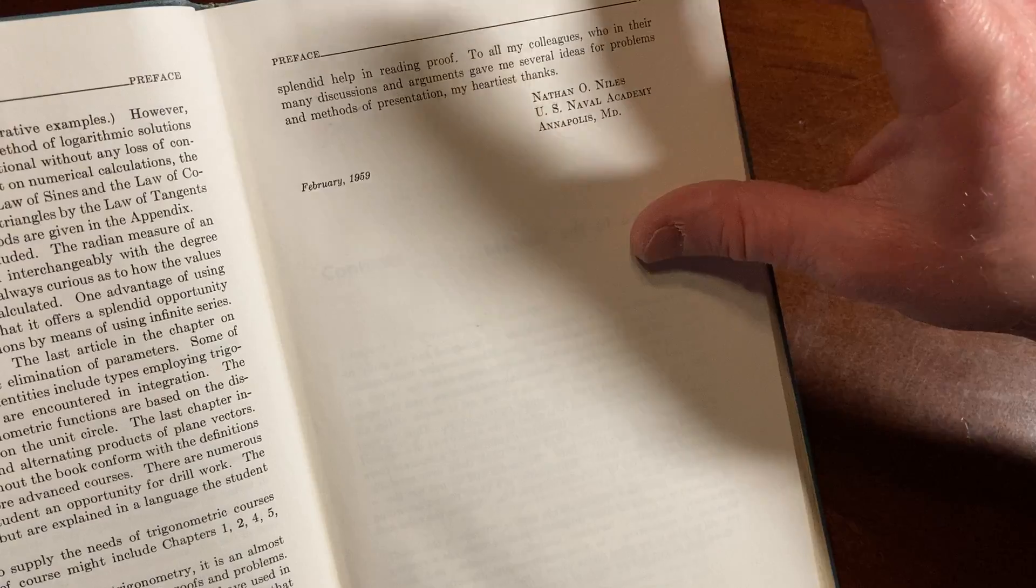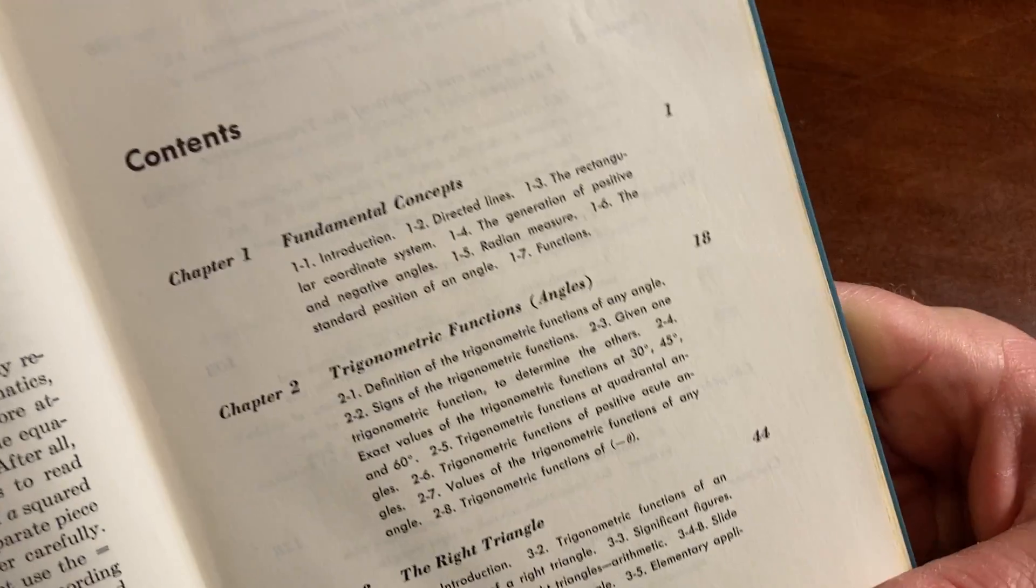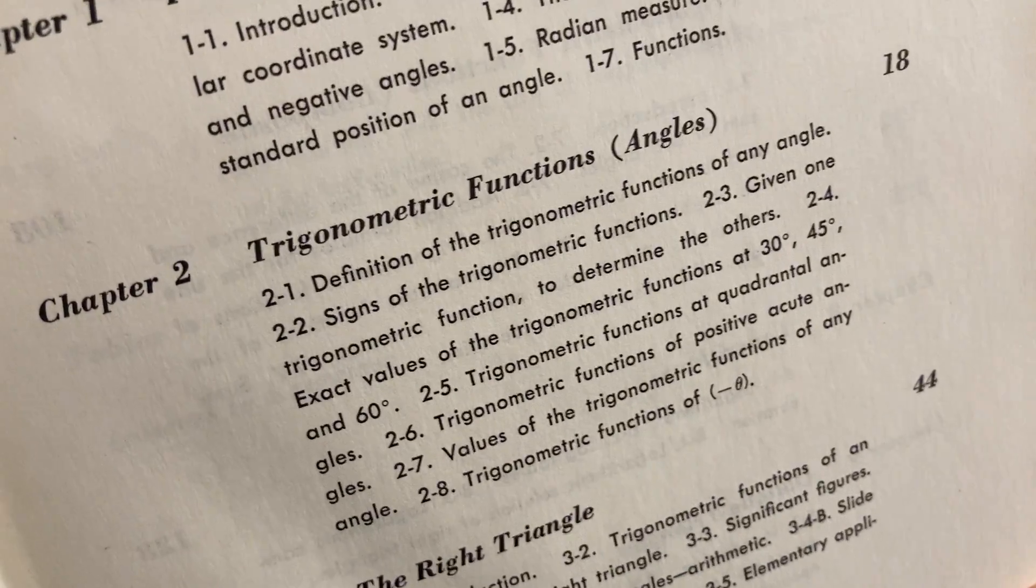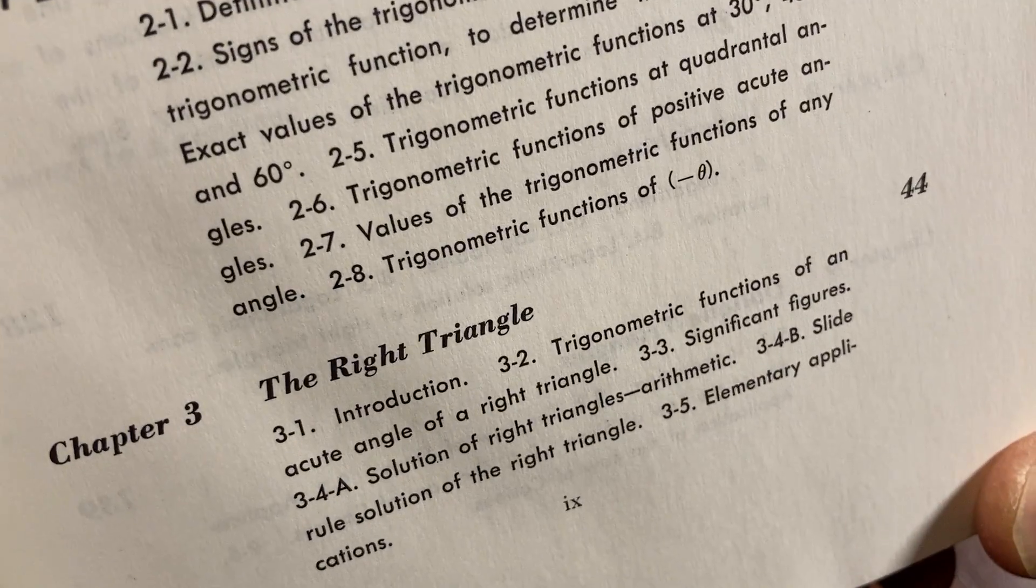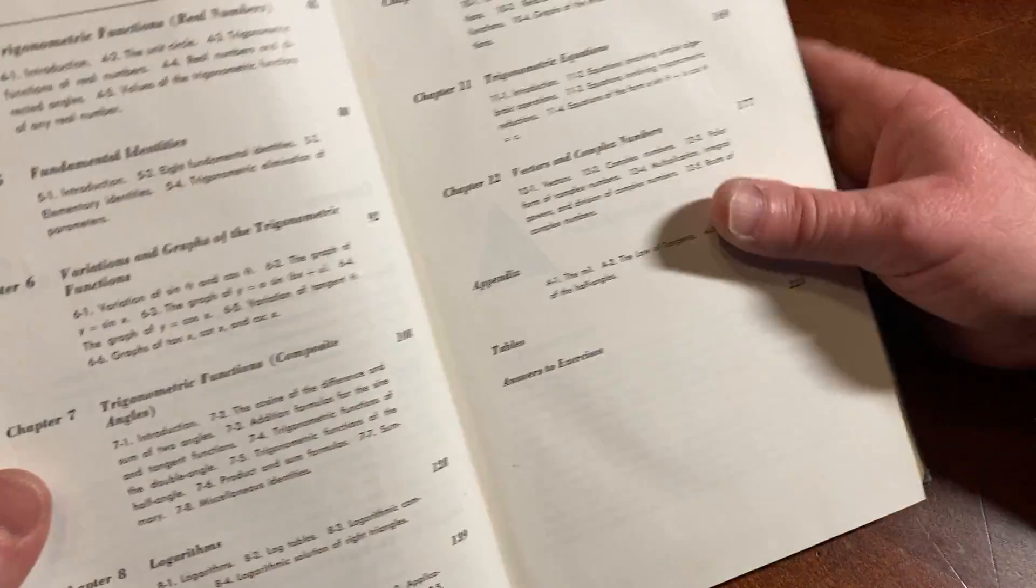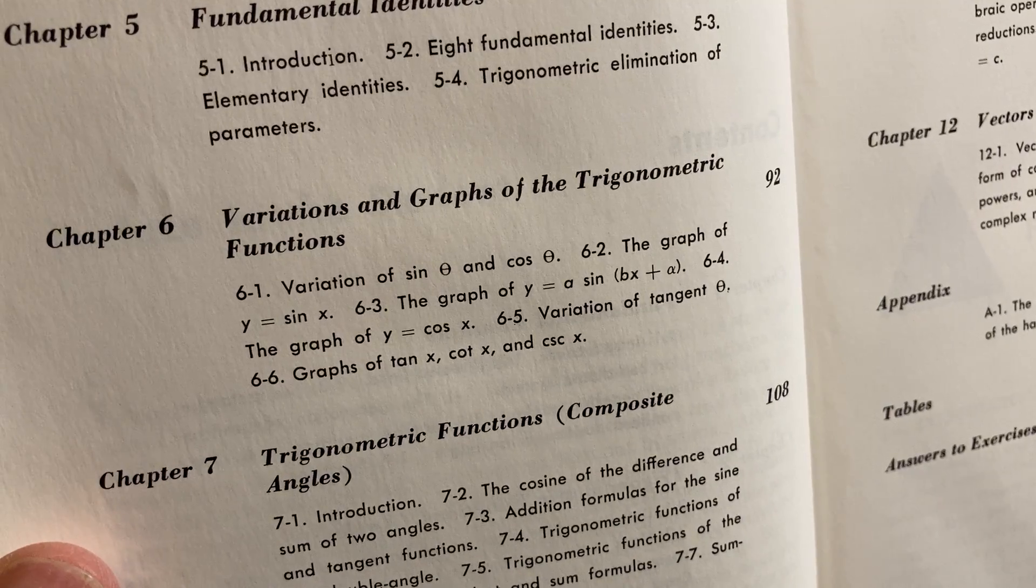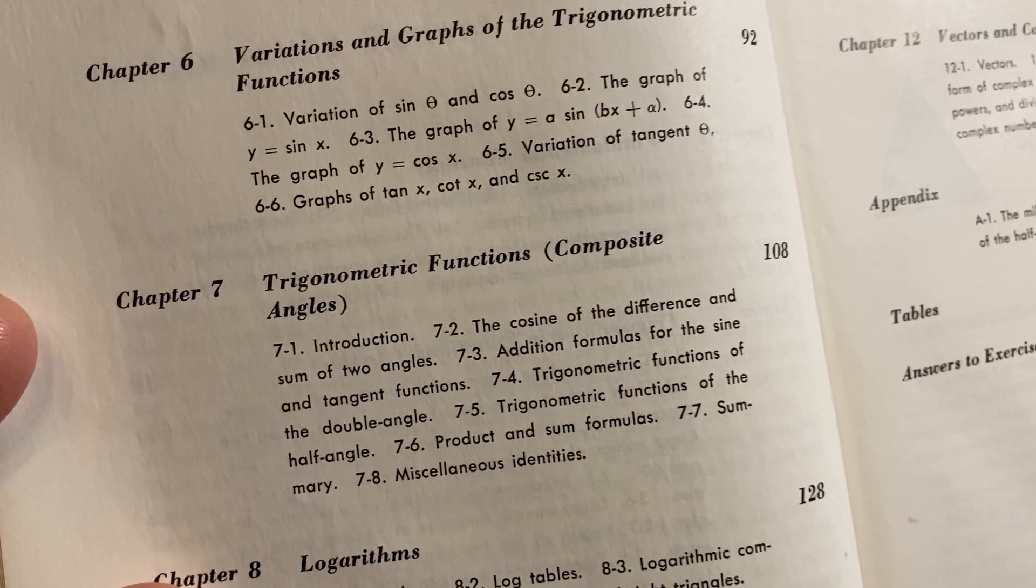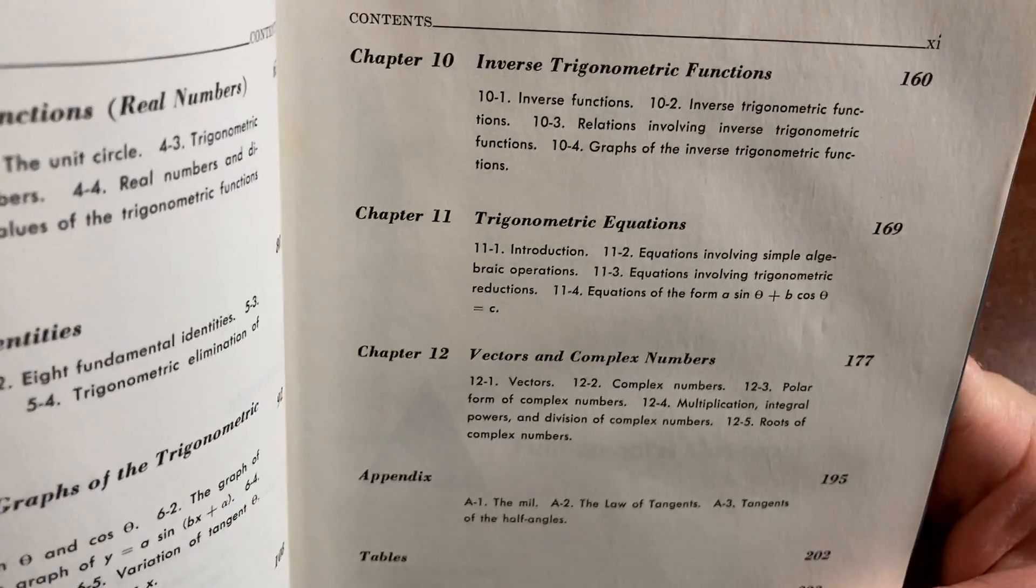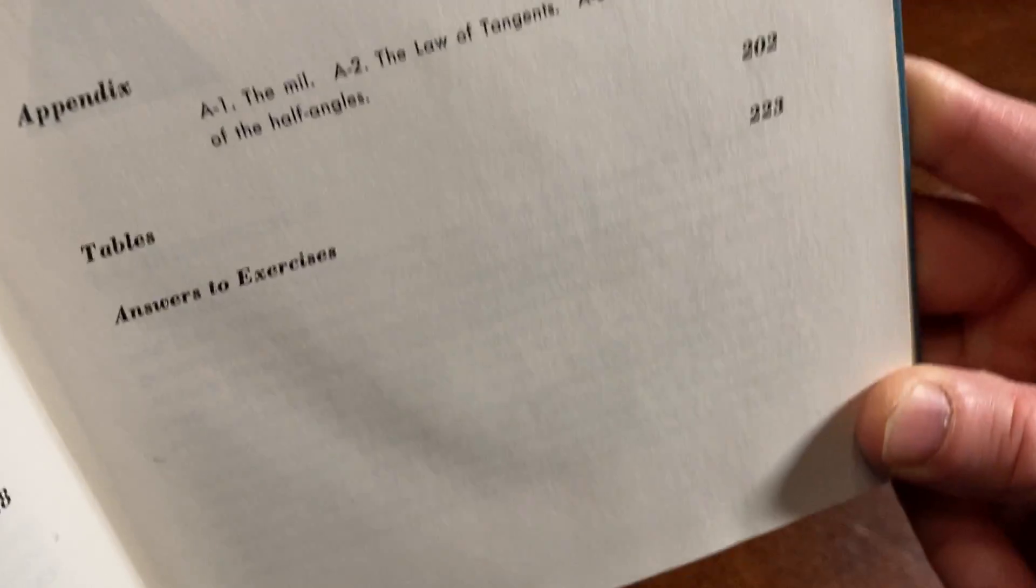Here are the contents. Fundamental concepts, that's chapter one. Chapter two, trigonometric functions of angles. Chapter three is the right triangle. Four is trigonometric functions of real numbers. Five is fundamental identities. Six is variations and graphs of the trigonometric functions. Seven is trigonometric functions of composite angles. Logarithms, oblique triangles. Inverse trig functions, trig equations. Vectors and complex numbers. And then tables. And then we have answers to exercises.